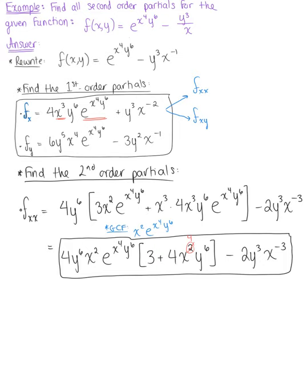Now, still using that first order partial with respect to x, we want to differentiate with respect to y to get the second order partial of x with respect to y. Looking at this expression, we have y to the sixth out in front as a power function, and in the exponential we have an exponent of y to the sixth, so we're going to need a product rule there. We'll keep 4x cubed out in front and apply the product rule with respect to y.